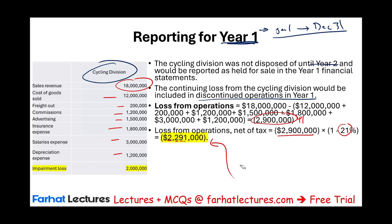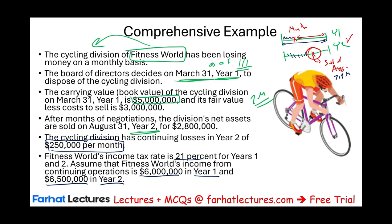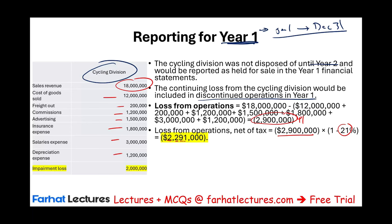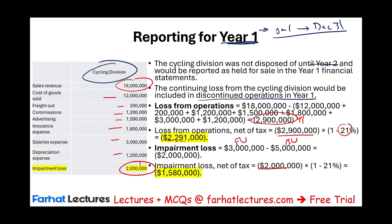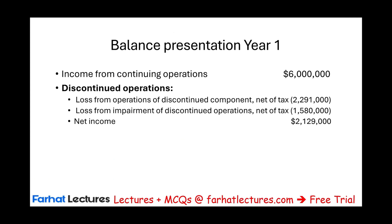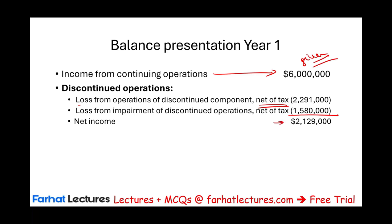We did not sell that division in year one — it was not sold until year two. So at the end of year one, we have to report any impairment loss. Do we have an impairment loss? Yes — $2 million. The fair value minus cost to sell is $3 million; the book value is $5 million, giving us a $2 million impairment loss. The impairment loss must also be reported net of tax: $2 million times one minus 21% equals $1,580,000. For year one, income from continuing operations is $6 million, minus loss from operations of discontinued operations net of tax of $2,291,000, minus loss from impairment of discontinued operations net of tax of $1,580,000, giving a net income of $2,129,000.